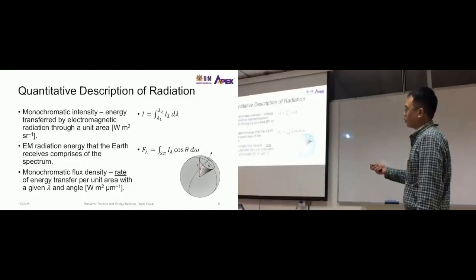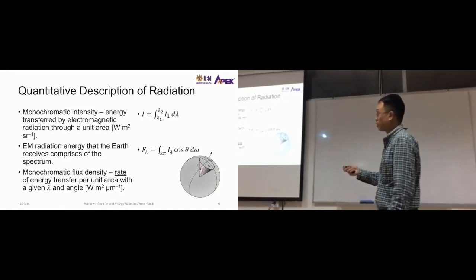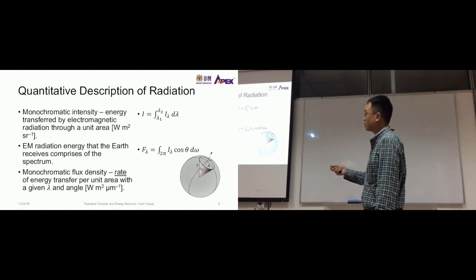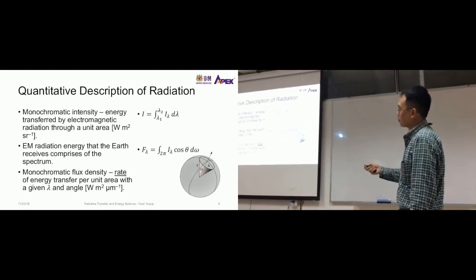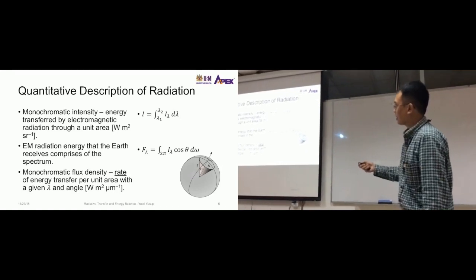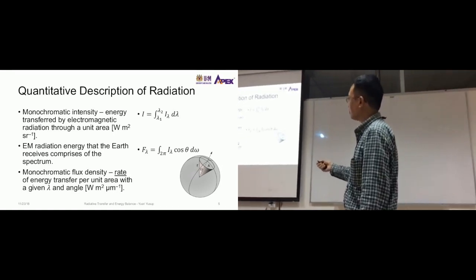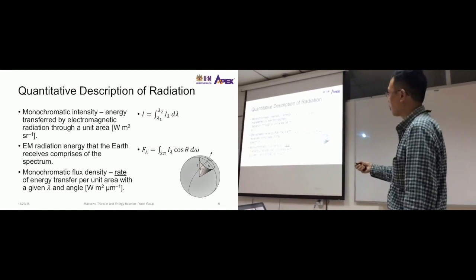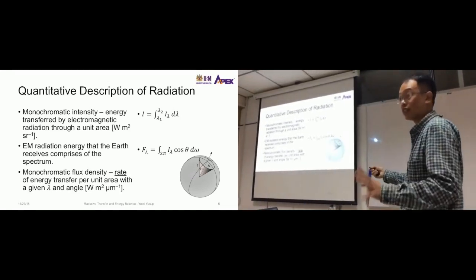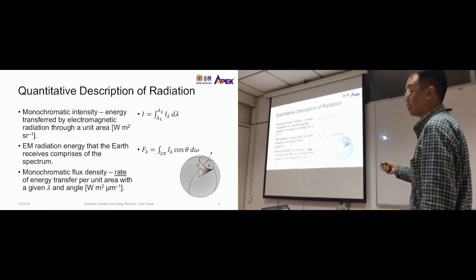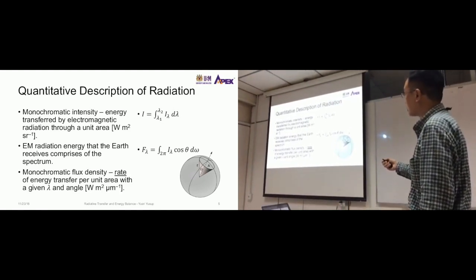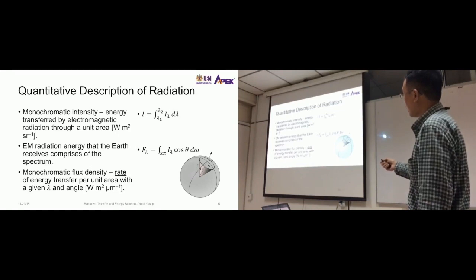We can calculate the monochromatic intensity — the term monochromatic means single light, like the color red for example. It refers to the energy transferred by electromagnetic radiation through a unit area. We can calculate that using this equation, where I stands for the monochromatic intensity for a single color, and this intensity is related to energy.